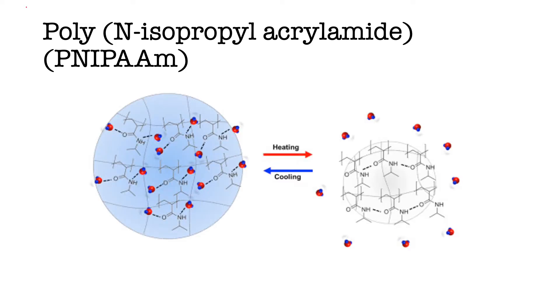One smart polymer I would like to focus on today is poly-N-isopropylacrylamide. As we saw earlier, this polymer changes in response to temperature. An important temperature in this reaction is something known as the lower critical solution temperature, or LCST. For poly-N-isopropylacrylamide, this temperature is around 32 degrees Celsius.